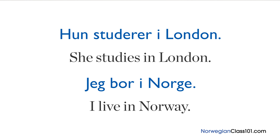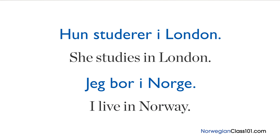Now let's do some examples with i. Consider hun studerer i London, meaning 'she studies in London,' and jeg bor i Norge, meaning 'I live in Norway.' In these sentences, the objects are either a big city or a country, so we need the preposition i.